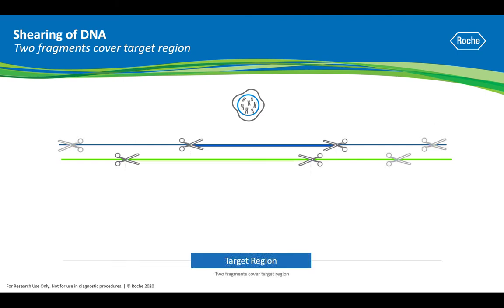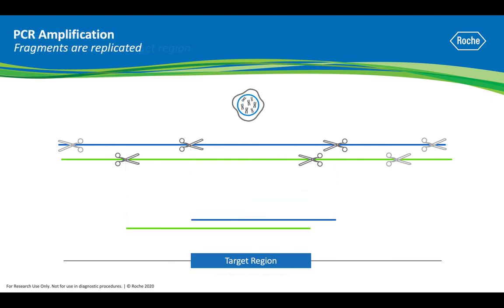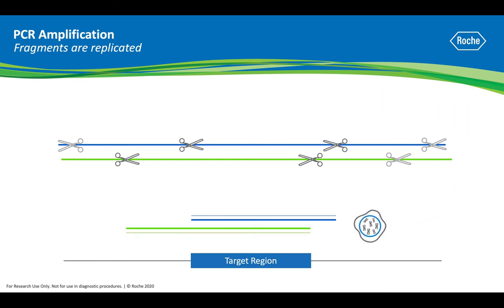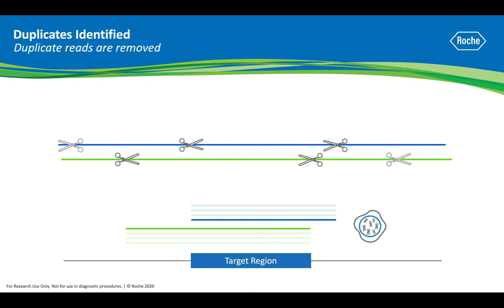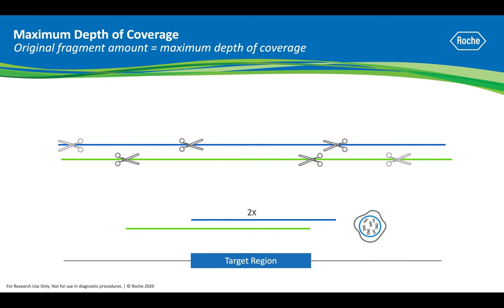But that's not so because during library prep, DNA is fragmented and converted into adapter-ligated molecules. Fragments go through designated PCR cycles and duplicates are created. Once the duplicates are identified and removed or marked, the results are 2x coverage. Sequencing more would just result in more of the same two unique molecules.